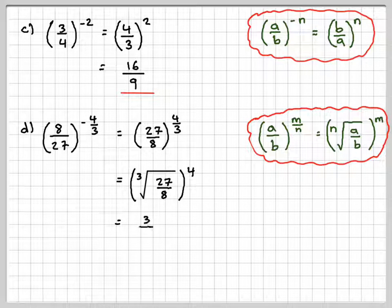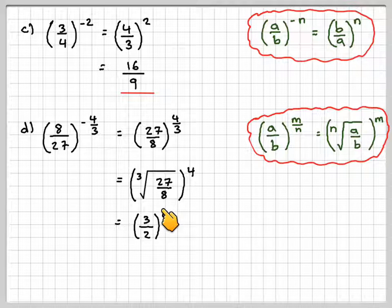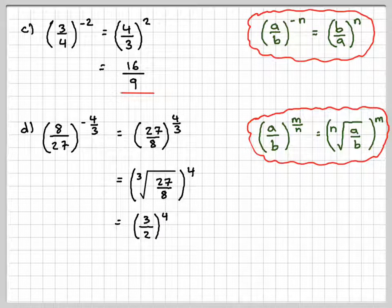So the cube root of 27 is 3, and the cube root of 8 is 2, and we've still got to raise it to the power of 4. Now 3 to the power of 4, so that's 3 times 3, which is 9, times 3, which is 27, times 3, which is 81.